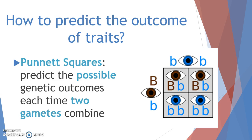Now we're going to figure out how to predict the outcome of traits in offspring based upon parent traits. The way that we do this is through the use of a tool known as a Punnett square. Punnett squares are all about predicting — they're going to predict the possible genetic outcomes every time two gametes combine. The letters on the outside of the Punnett square represent the homologous chromosomes from one parent, meaning the two alleles they can pass on to their offspring.